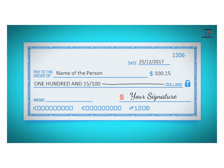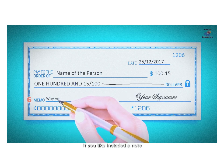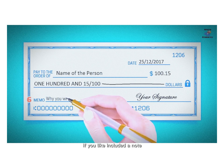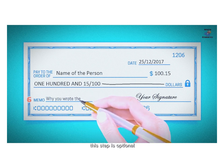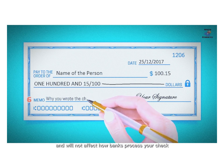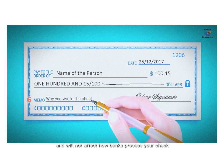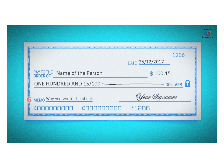Number 6: Memo Line. If you like, include a note — this step is optional and will not affect how banks process your check. The memo line is a good place to add a reminder about why you wrote the check.